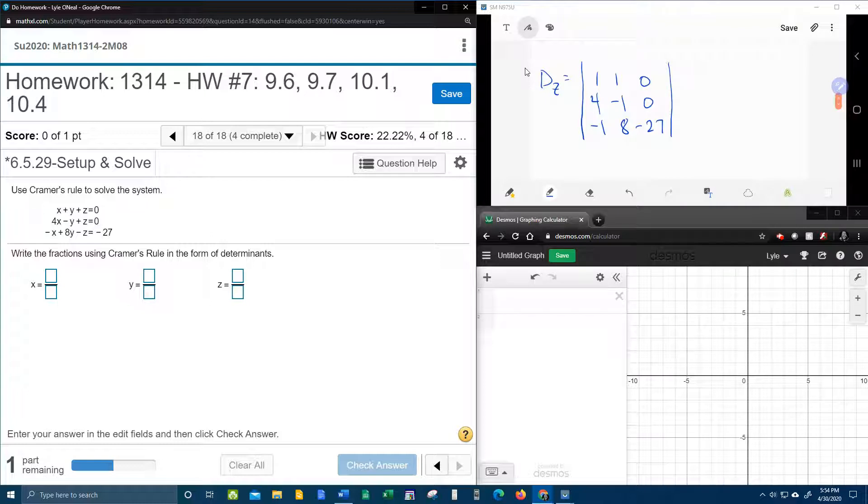And with the shortcut one more time, copy and paste, 1, 4, negative 1, 1, negative 1, and 8. On the diagonal, multiplying, we get a positive 27. 0 times anything is 0. And 0 times anything is 0. So that's 27. Change direction. We're going to change the sign. 0, 0, 0.